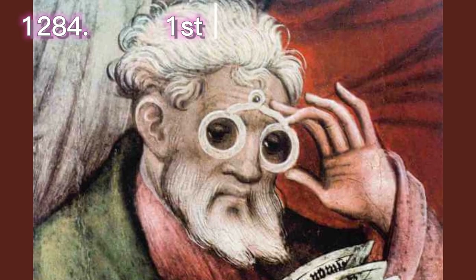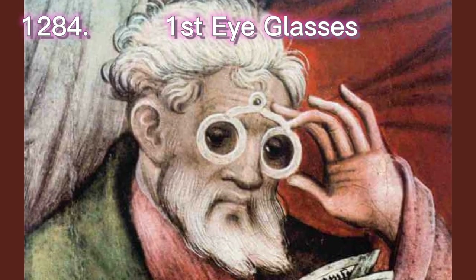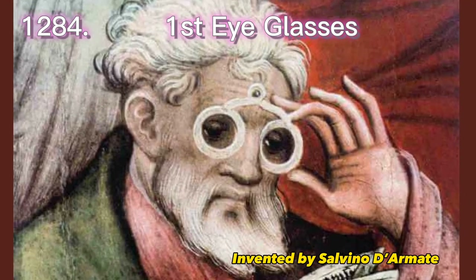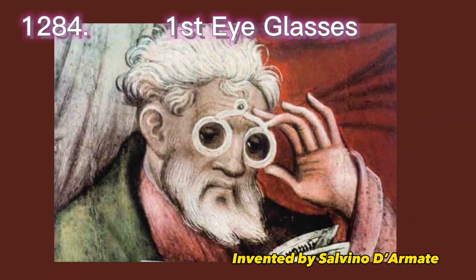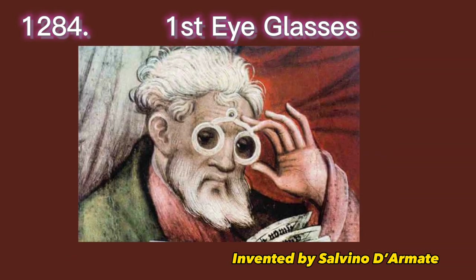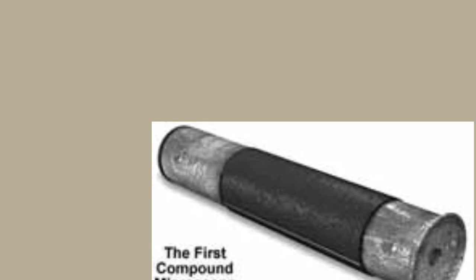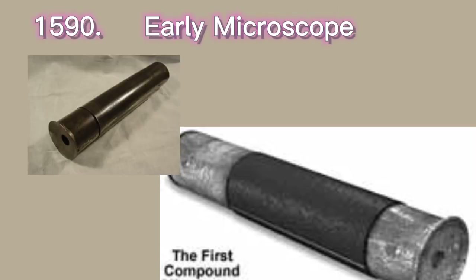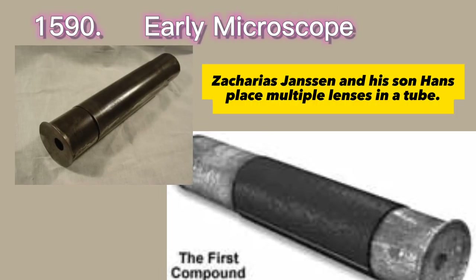In 1284, Salvino d'Armate invented the first wearable eyeglasses. Then in 1590, the early microscope was developed when Zacharias Janssen and his son Hans placed multiple lenses in a tube.